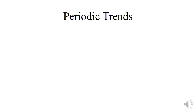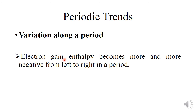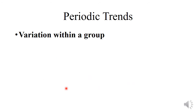Next is periodic trends. First is variation along a period: electron gain enthalpy becomes more and more negative from left to right in a period. This is because as we move across a period from left to right, the atomic size decreases and the nuclear charge increases. Both these factors tend to increase the force of attraction between the nucleus and the incoming electron. Hence, electron gain enthalpy becomes more and more negative in a period from left to right.